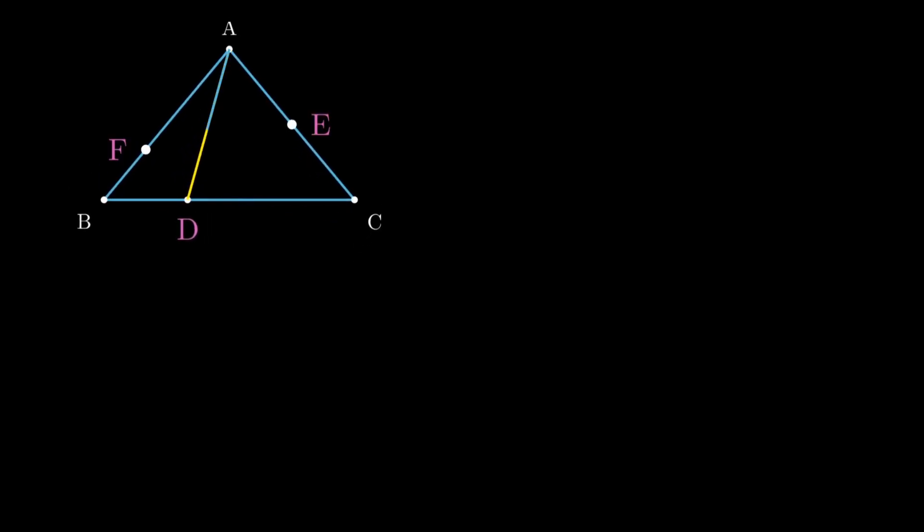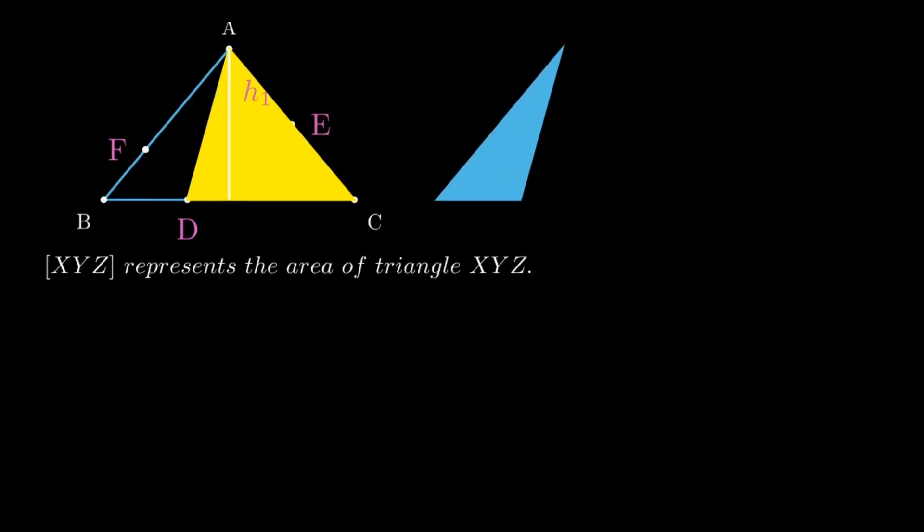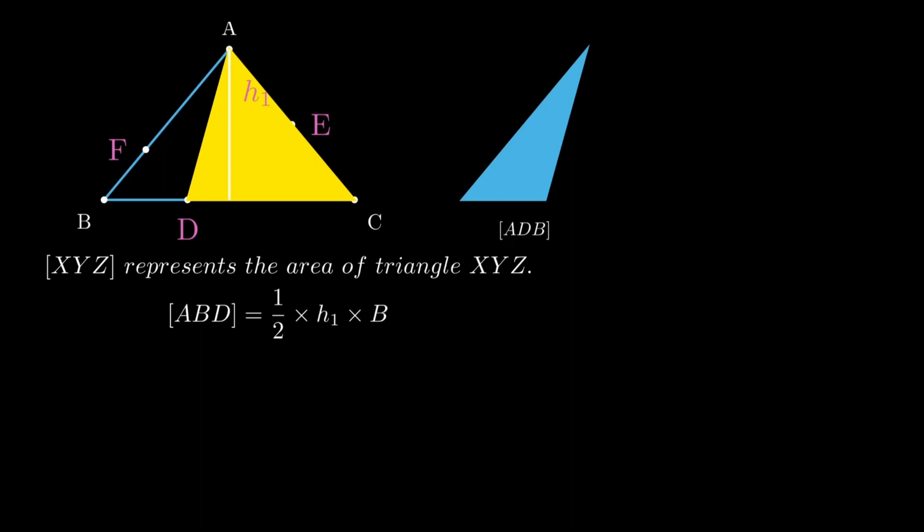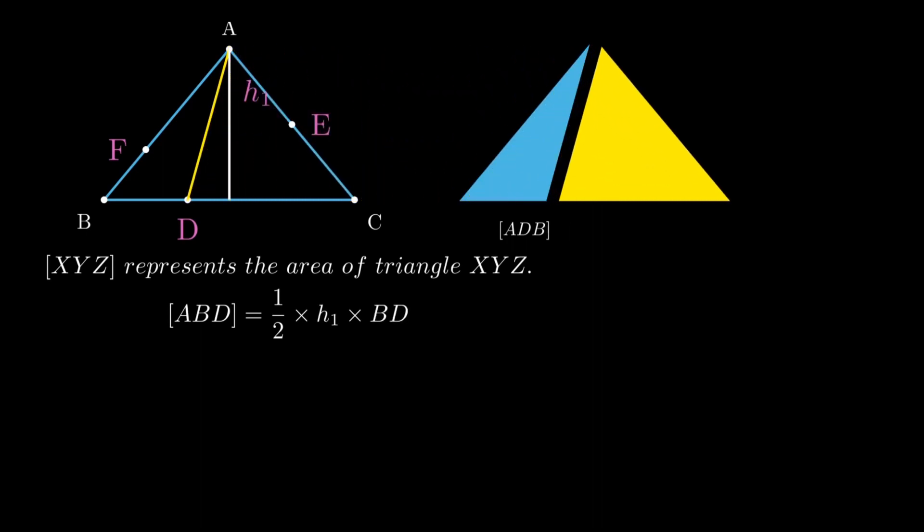Suppose we drop a perpendicular from A to BC. Suppose its length is H1. Notice that H1 is the common altitude of both triangle ABD and ADC and ABC. So area of triangle ABD is half into H1 into BD. It's half into height into the base. That's the formula that we are using.